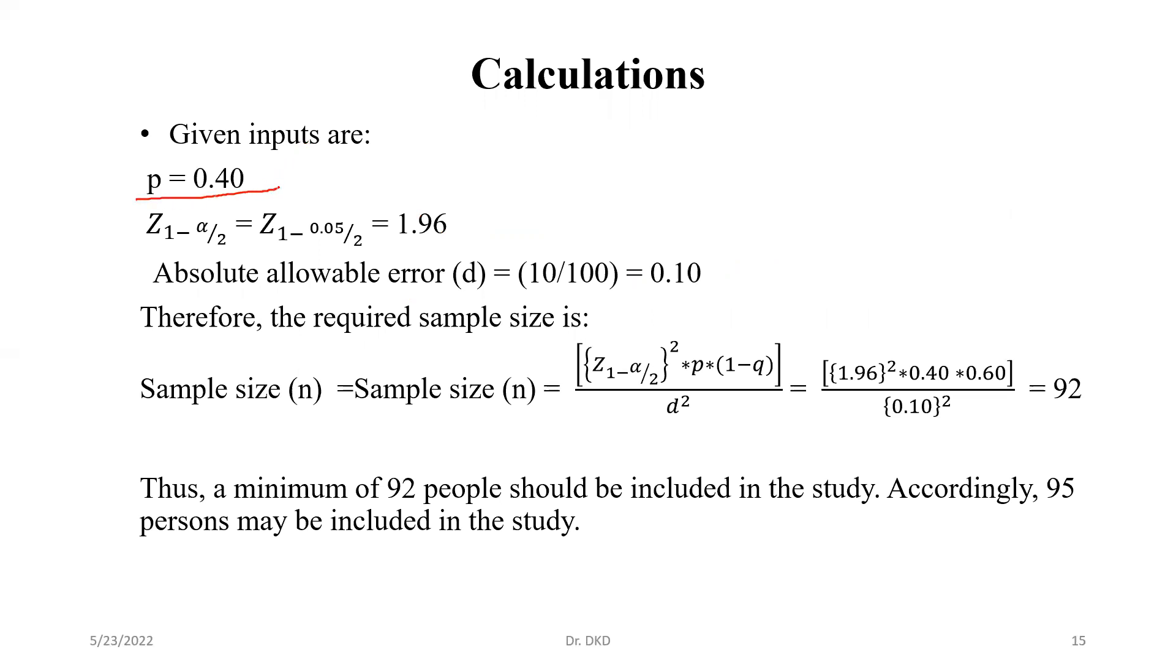So P is given as 40%, and Z1 minus alpha by 2 for two-sided normal deviate would be 1.96, and absolute allowable error is given 10%, which would be 0.10.